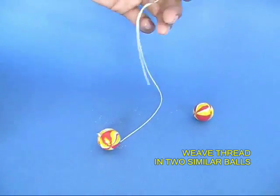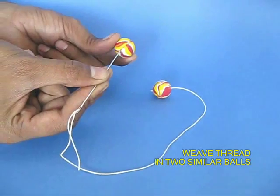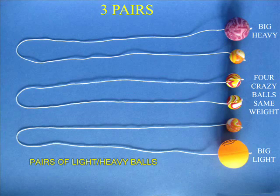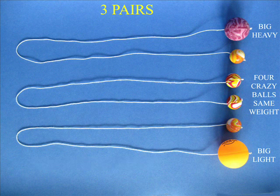Now weave the thread in a similar manner through the other ball. Now basically you will have two balls hanging by a thread. Make several pairs of light and heavy balls.